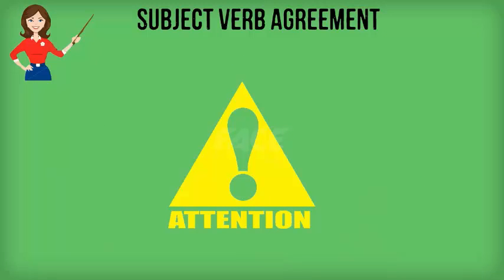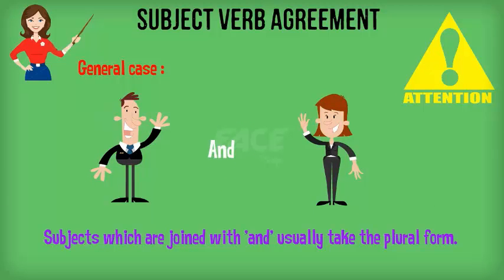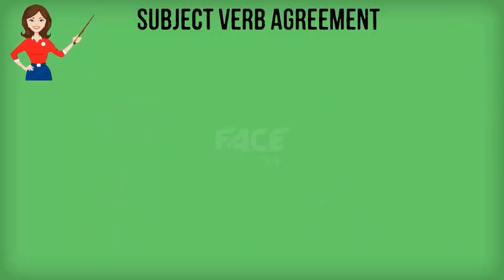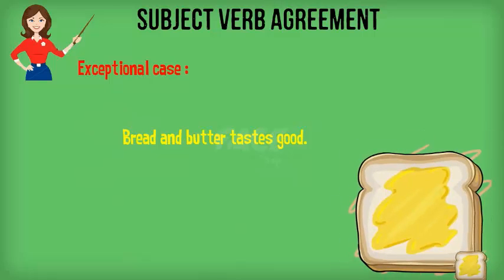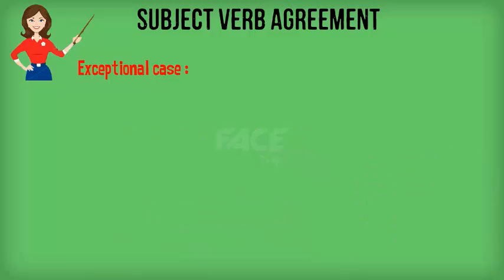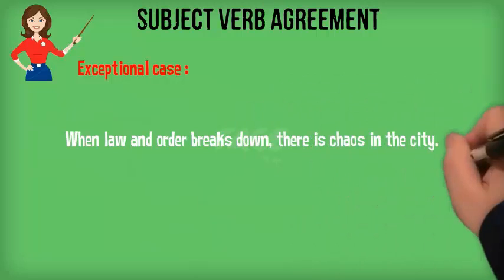As a general rule, we use a plural verb when two or more subjects are connected by 'and.' But there are a few exceptions. For example, 'Bread and butter tastes good' — here, bread and butter are so strongly connected that they form a composite subject expressing one idea rather than two. Similarly, 'When law and order breaks down, there is chaos in the city.'